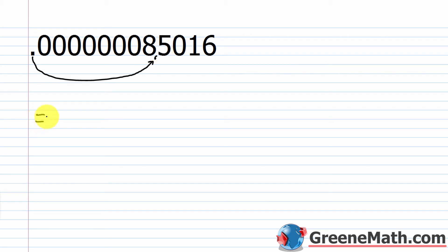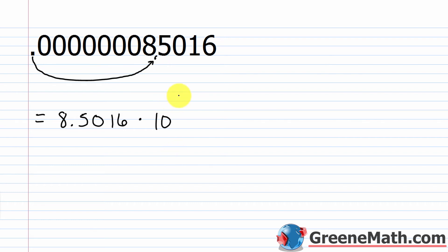Next: 0.0000000085016. Move the decimal to immediately after the first non-zero digit — after the 8 — giving 8.5016. Delete the preceding zeros. The decimal moved eight places.